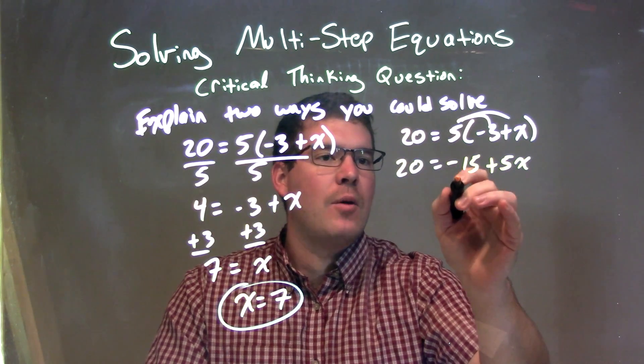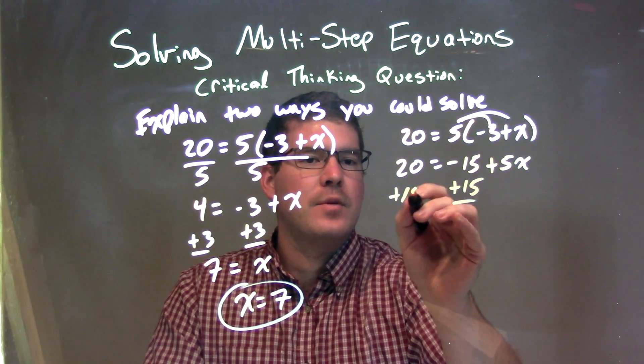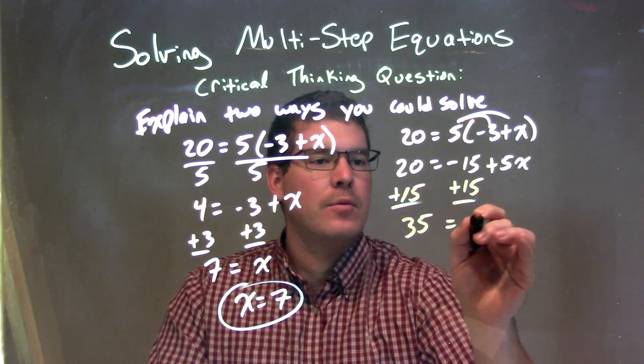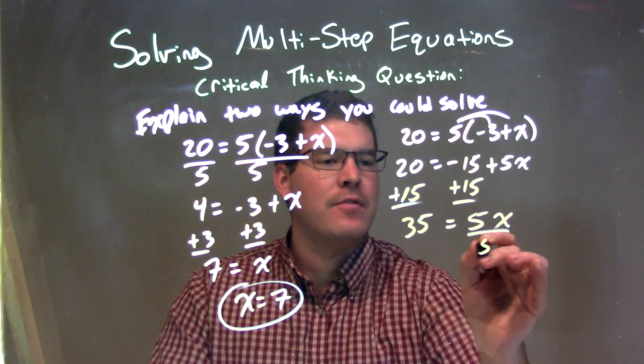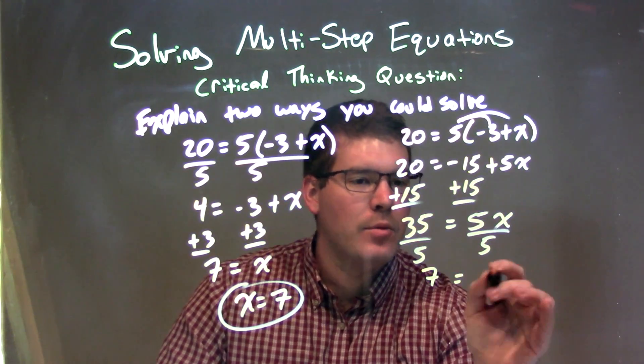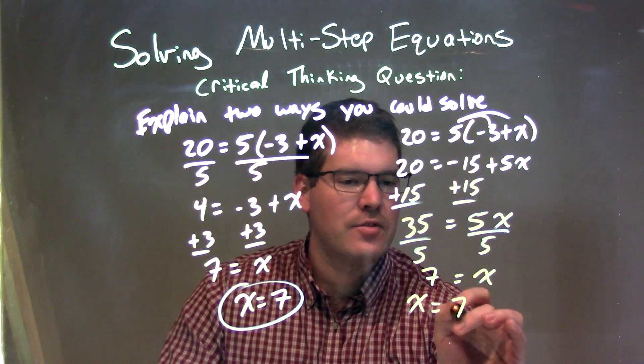Well, what I want to do now, let's add 15 to both sides, get x by itself. So we add 15 to both sides, leaving me 20 + 15, which is 35, equals 5x. I'm going to divide by 5 to both sides. 35 divided by 5 is 7, equals x. Rewrite that to have x come first, x = 7, and there we go.